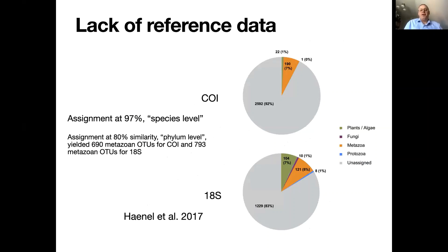If you go a little bit further and look at the CO1 reads, so in the Hänel et al. study, we used the QIIME pipeline and there you have a threshold. At 97% similarity you consider sequences to belong to the same species. And if you apply that to CO1, most of the sequences — a vast majority, 92% of the CO1 sequences — are not assigned to any species.